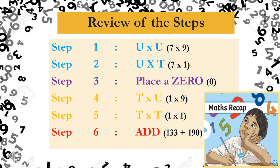Let's do a quick recap of cross multiplication. Step 1 is my unit times unit, which was 7 times 9. Step 2 was my unit times my ten, which was 7 times 1. Step 3 was placing a zero, because I'm going to multiply by 10 in my next step. Step 4 was 10 times unit, which was 1 times 9. Step 5 was 10 times 10, which was 1 times 1. Step 6 was adding those two numbers of 133 plus 190, and therefore we came to a final answer of 323. Boys and girls, if you follow these easy steps, you will master long multiplication. I wish you all the best.